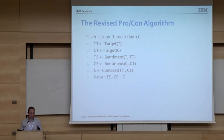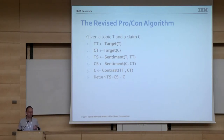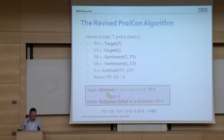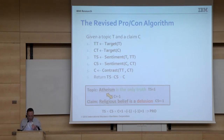Here is the fixed algorithm. We identify the sentiment targets in the topic and in the claim, compute the sentiment for the target in the topic and in the claim, compute the contrast between the targets, and then the final result is the product of the topic sentiment, the claim sentiment, and the contrast score. Applying this to the previous example: 'atheism is the only truth' has topic sentiment plus one; 'religious belief is a delusion' has claim sentiment minus one; and the contrast is minus one. Multiplying one times minus one times minus one gives us one — a pro claim. So now it works correctly.